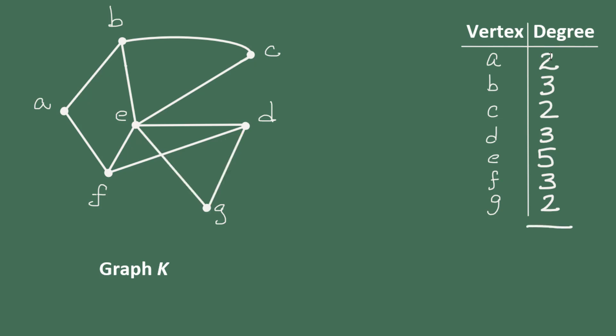Let's go ahead and find the sum. So two plus three is five, plus two is seven, plus three is ten, plus five is fifteen, plus three is eighteen, plus two is twenty.